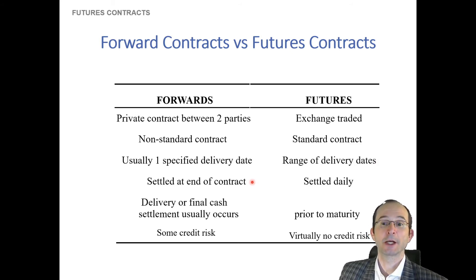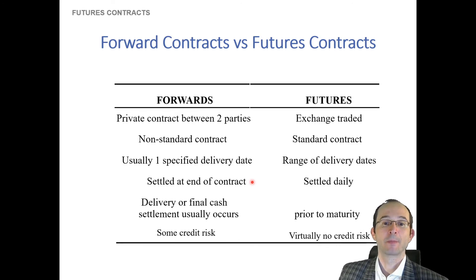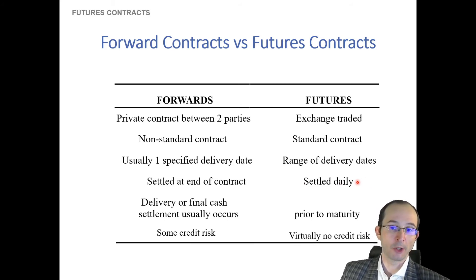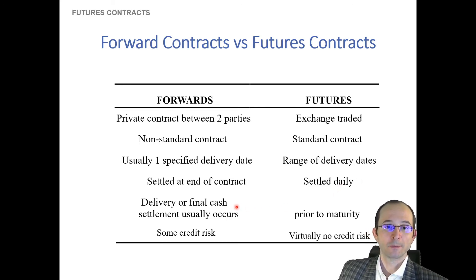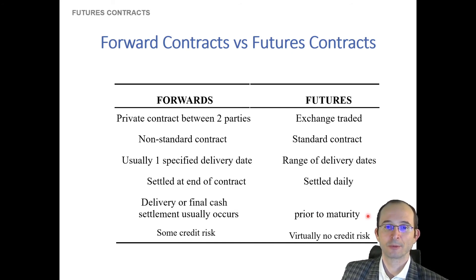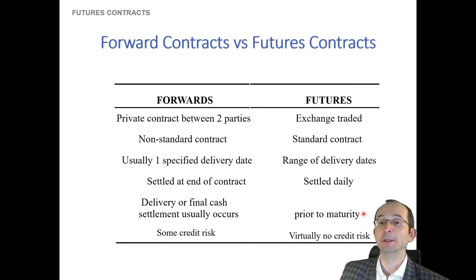Forwards are settled at the end of the contract, so they aren't mark-to-market the way that futures are. There is no ebb and flow in the margin account. There may be collateral, but it's not settled at the daily frequency as it is with futures, where this margin — which is essentially the collateral — is updated based on that settlement price at the end of each day. With forwards, delivery or a final cash settlement usually occurs, whereas futures are closed prior to maturity. Since futures are so standardized, there's less reason for market participants to really want delivery of the standardized commodity, unless they actually happen to be using it as part of their production process.